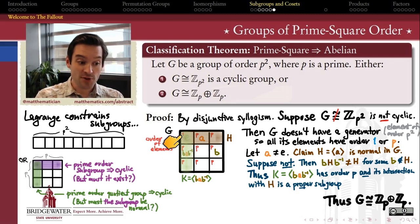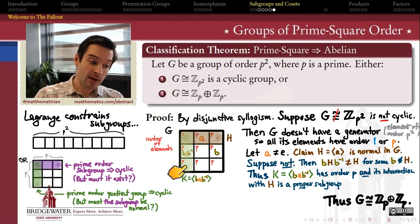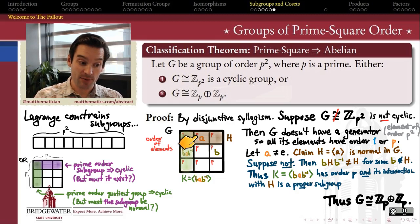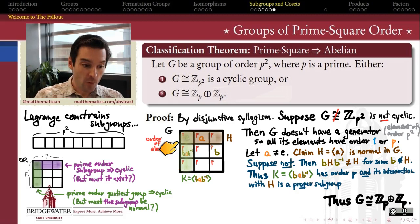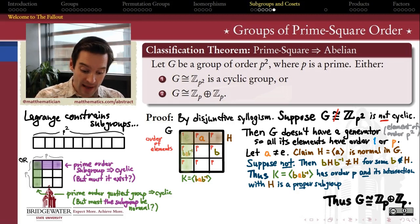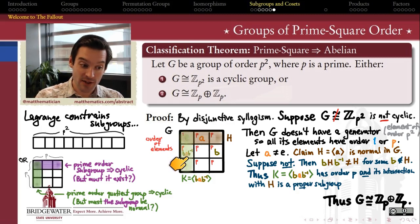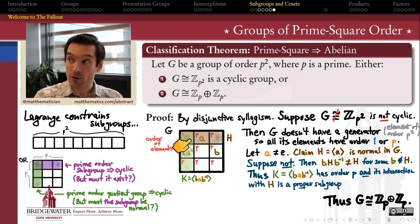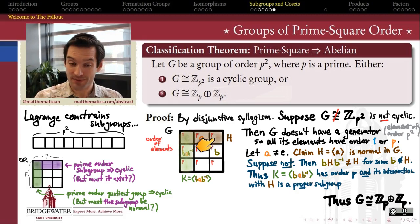So I now have two subgroups: H generated by A, and K generated by BAB⁻¹, each of order p. The intersection of H with K consists only of the identity element, because the intersection must be a subgroup of H, and by Lagrange's theorem, since H has order p, the intersection has order p or order 1. It can't have order p because K contains an element not belonging to H, so the intersection must be trivial.